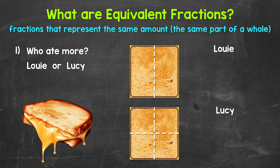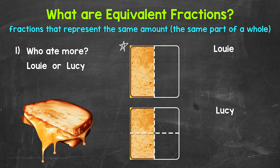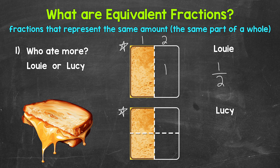Now Louie eats one piece and Lucy eats two. Here's Louie's grilled cheese after he ate one piece, and here's Lucy's after she ate two pieces. What fraction of Louie's grilled cheese was eaten? Louie's grilled cheese was divided into two equal pieces, so two is our denominator. Then Louie ate one of the pieces, so one is our numerator. Louie ate one piece out of the two total pieces, so our fraction is one half.